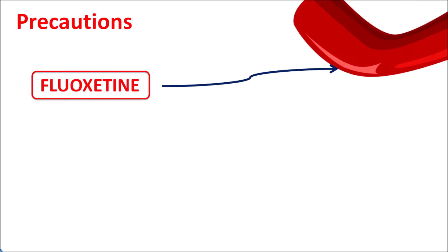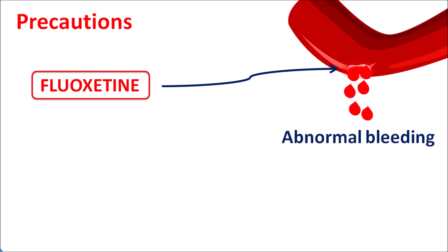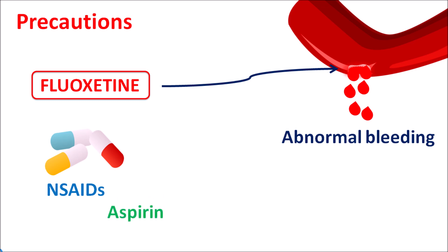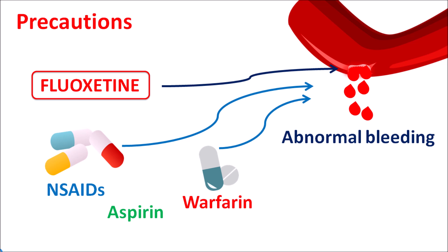Fluoxetine can affect blood vessels and increase the risk of bleeding, resulting in abnormal bleeding. This is very important when fluoxetine is combined with other drugs such as NSAIDs. For instance, aspirin is both an NSAID and an antiplatelet agent which reduces platelet aggregation, resulting in enhanced hemorrhage. Similarly, anticoagulants like warfarin can also increase the risk of bleeding, so when fluoxetine is combined with these drugs the risk of abnormal bleeding is further increased.